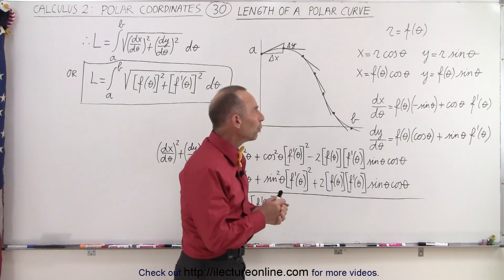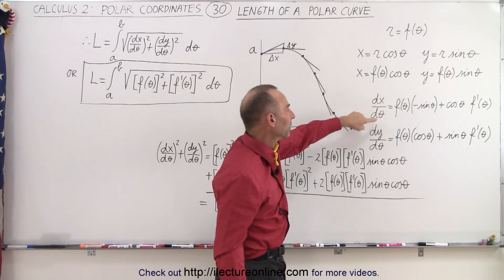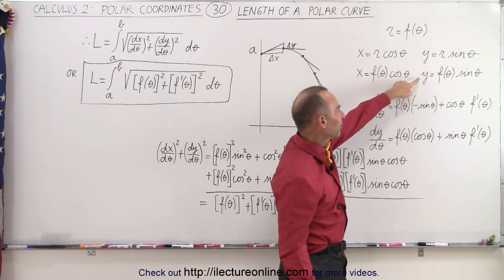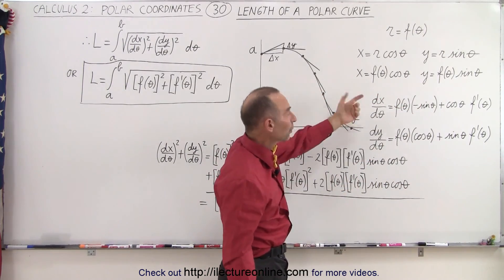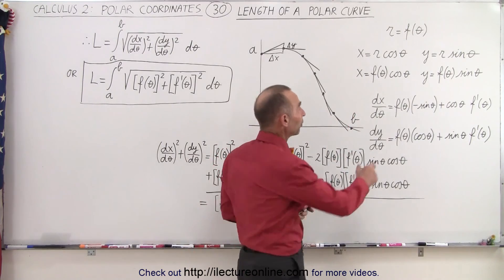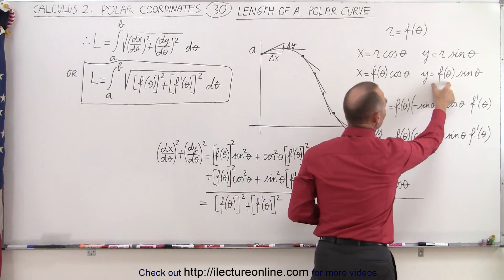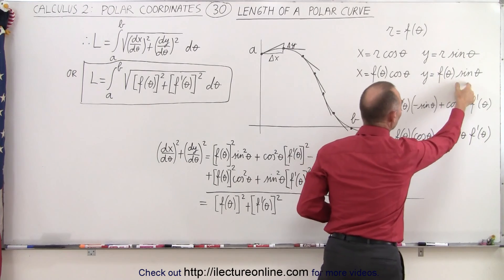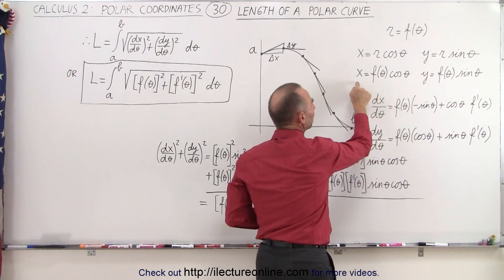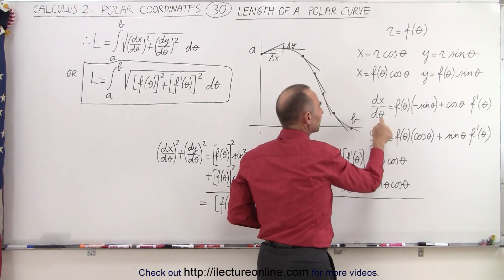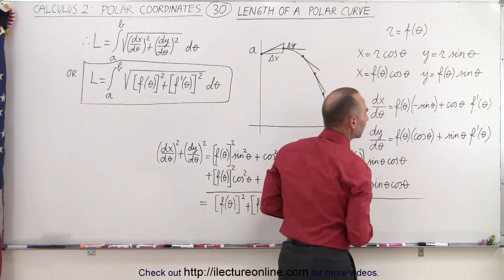Once we have that, we can take the derivative of x with respect to theta and the derivative of y with respect to theta. We have to use the product rule because we have f(θ) times cosine and f(θ) times sine. Using the product rule, this gives us dx/dθ and dy/dθ.